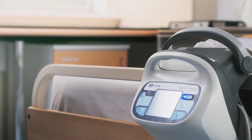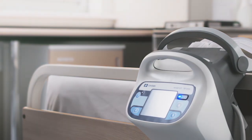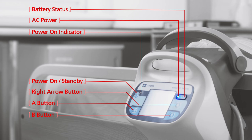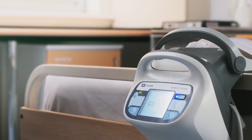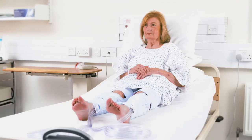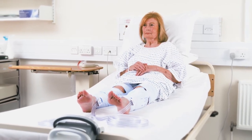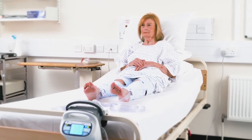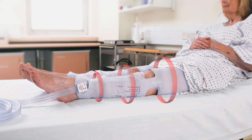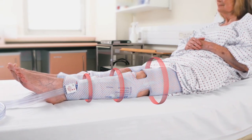The Kendall SCD 700 series controller has a simple, easy-to-understand interface with four buttons and three indication spots. Press the power on/standby button to begin operation. If using leg sleeves, no further intervention is required, as the controller will automatically detect whether a knee length or thigh length sleeve is being used and begin to deliver the set pressure pattern of 45-40-30 mmHg.